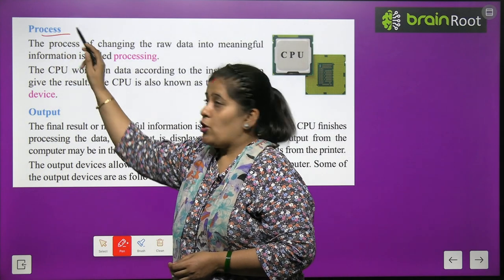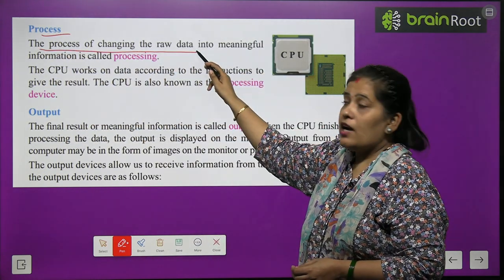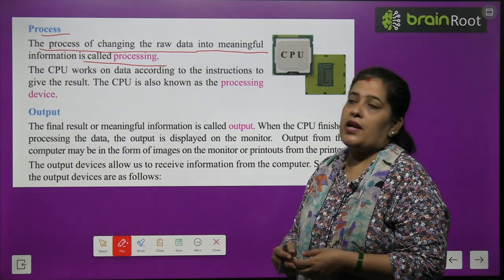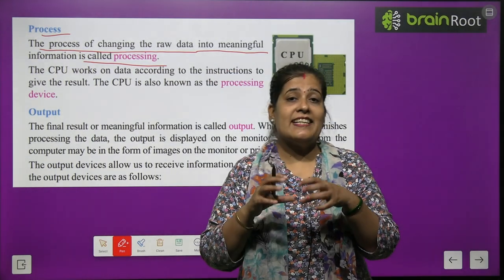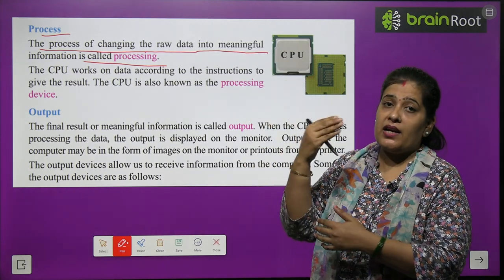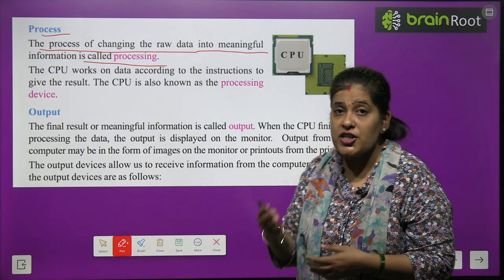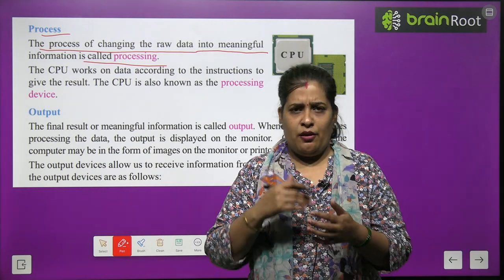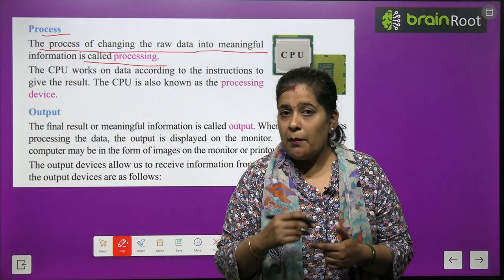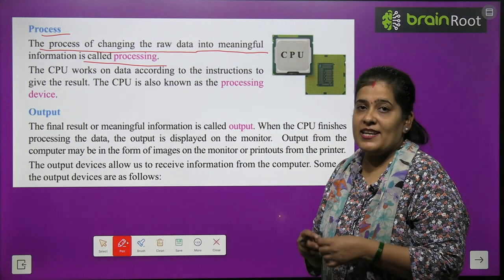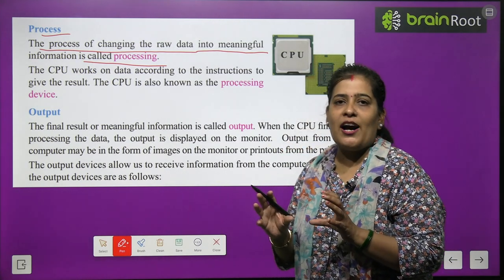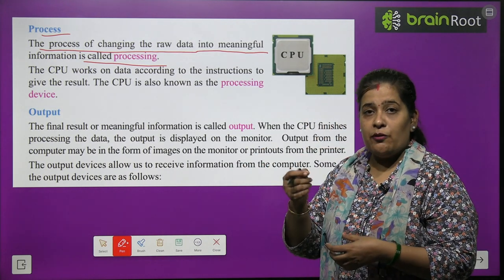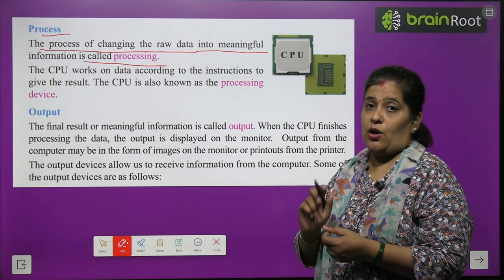Now we will learn about process. The process of changing the raw data into meaningful information is called processing. जैसे कच्ची सब्जी है, तो वह input है, फिर वह पकती है. जो उसके पकने की क्रिया होती है, उसे हम processing कहते हैं. कच्चा आलू जब boil हो जाएगा — आपने उसे gas पे रखा, pressure cooker में डाला, whistle आई — तो वह processing हो रही है.